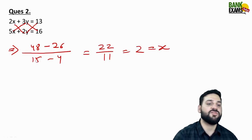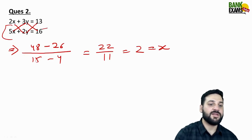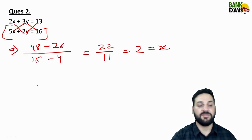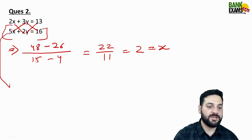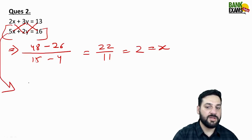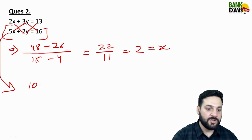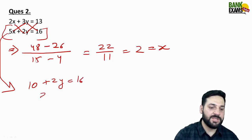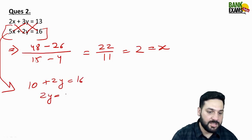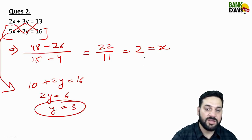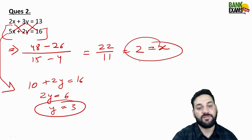We got the value of x = 2. Put it into the second equation: 5 multiplied by 2 = 10, so 10 + 2y = 16. Then 16 - 10 = 6, so y = 3. We got x = 2 and y = 3 — very simple technique to solve a linear equation.